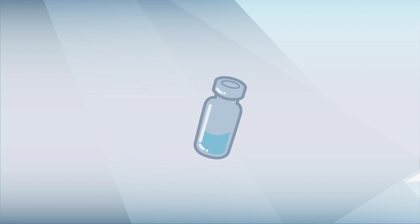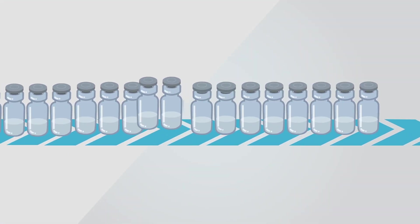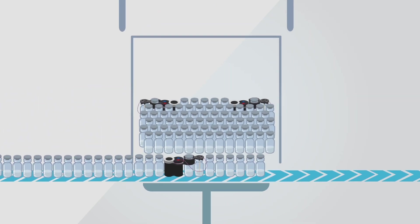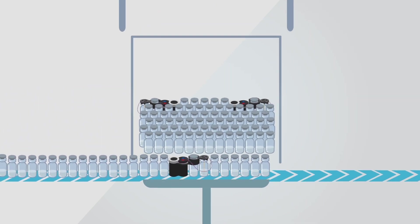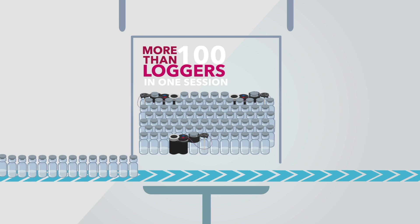Once vials are filled inside the isolator, the LiO Pro loggers are positioned at predetermined points on the loading line, allowing for precise temperature measurements at the critical locations inside the freeze dryer, with a capacity of more than 100 data loggers in one session.